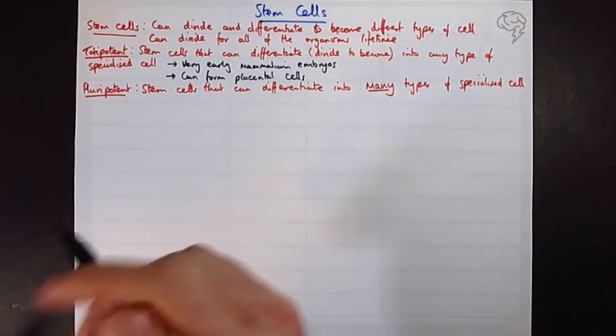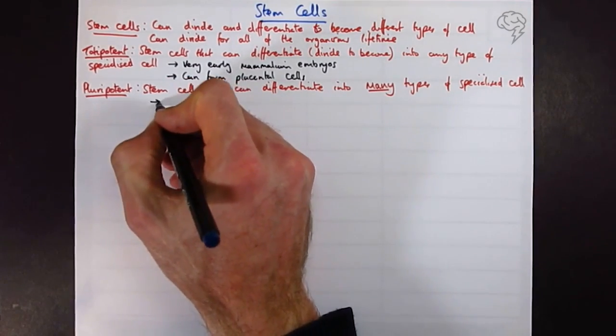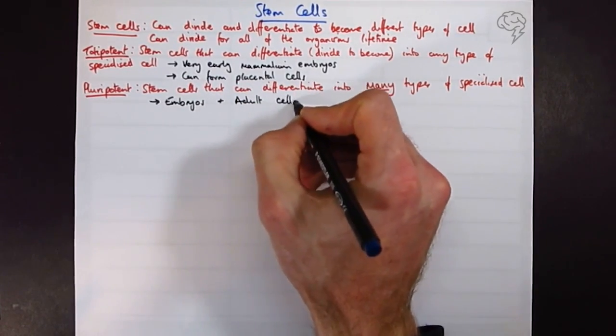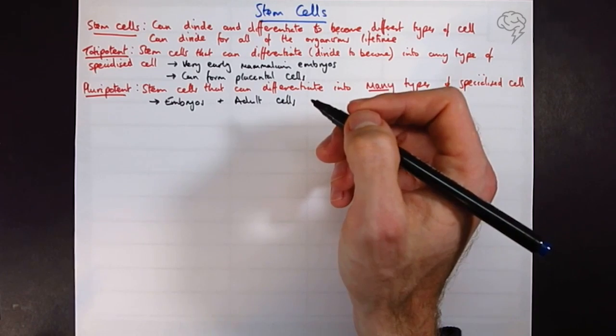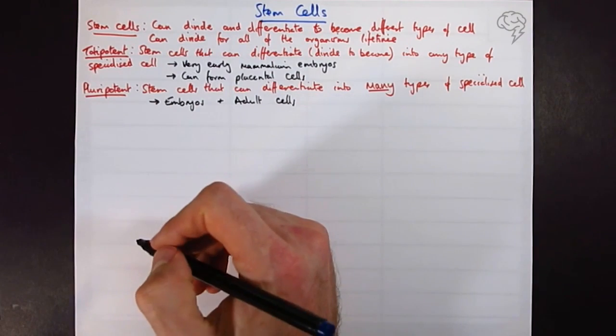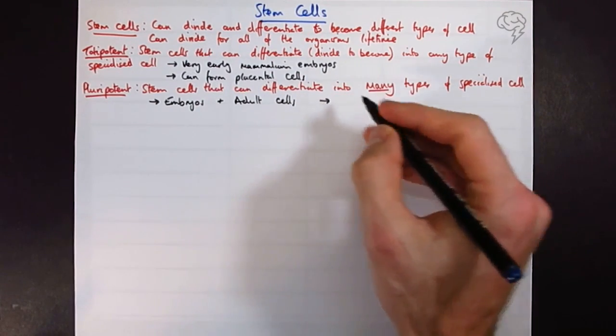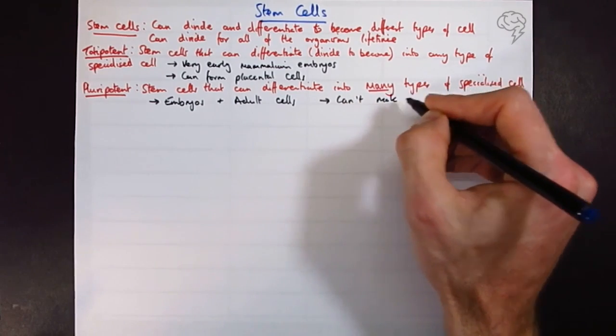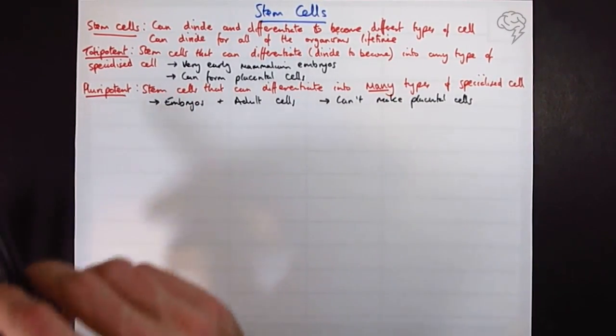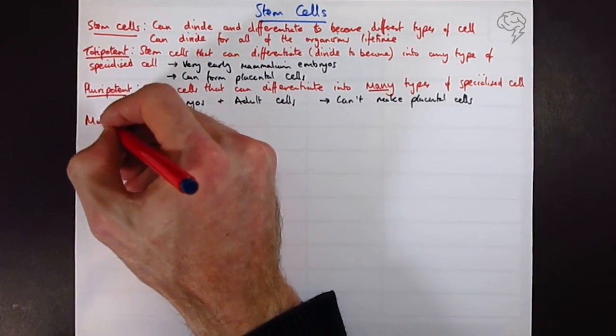Where do we find them? Well, these could be in embryos, they could also be in adult cells. By adult I mean post-birth, basically no longer an embryo inside the womb. All types of stem cells remember can divide for the organism's lifetime, that's going to go for all of these stem cells, but they cannot make placental cells. So they have pluripotency, they have the potential to become many things like plural, but they can't become everything.